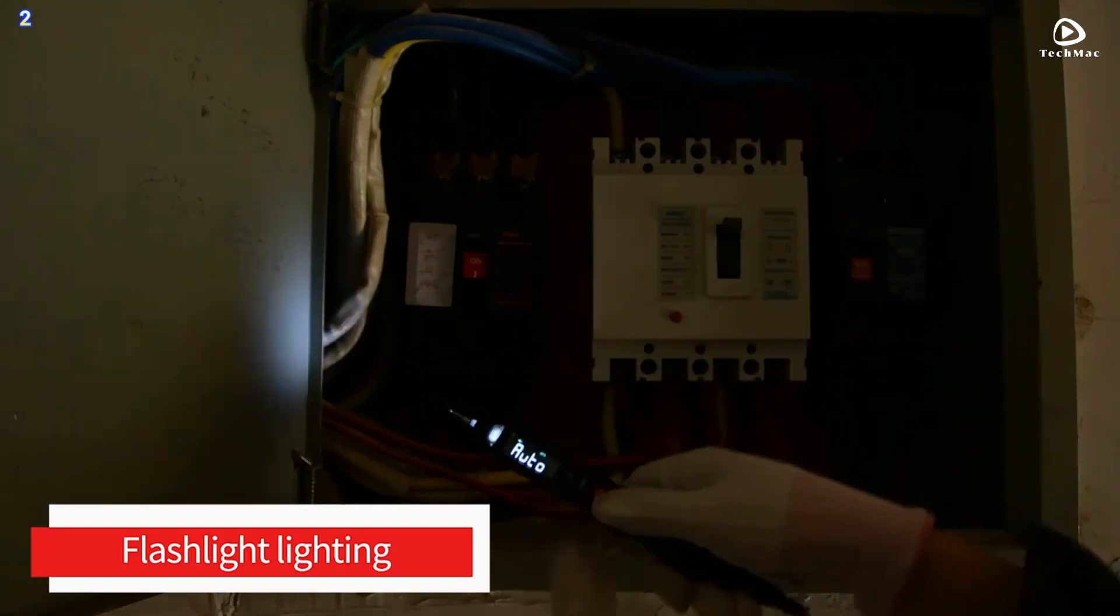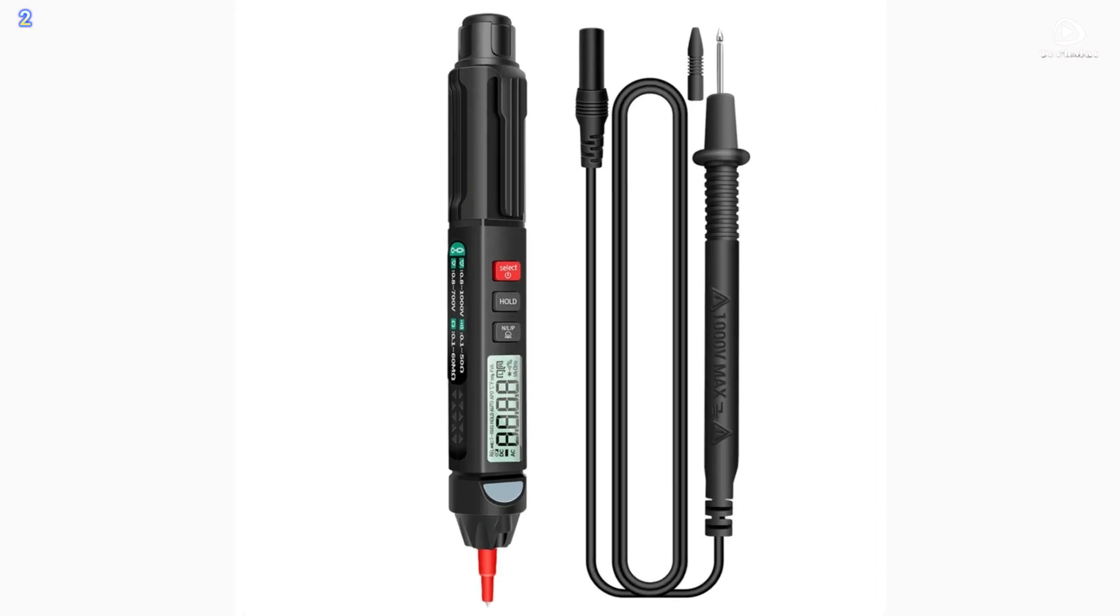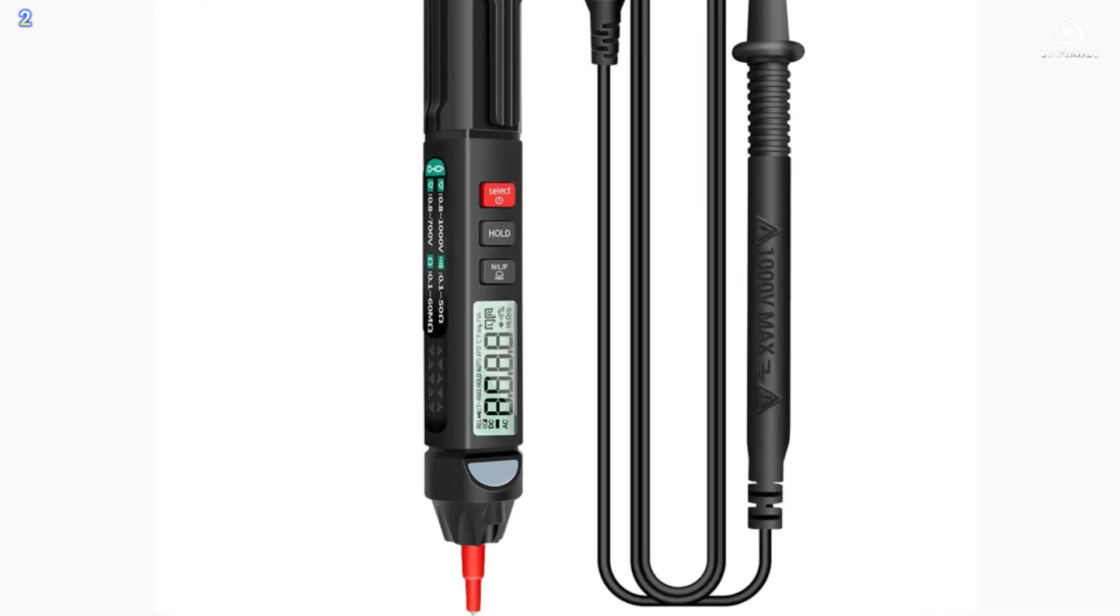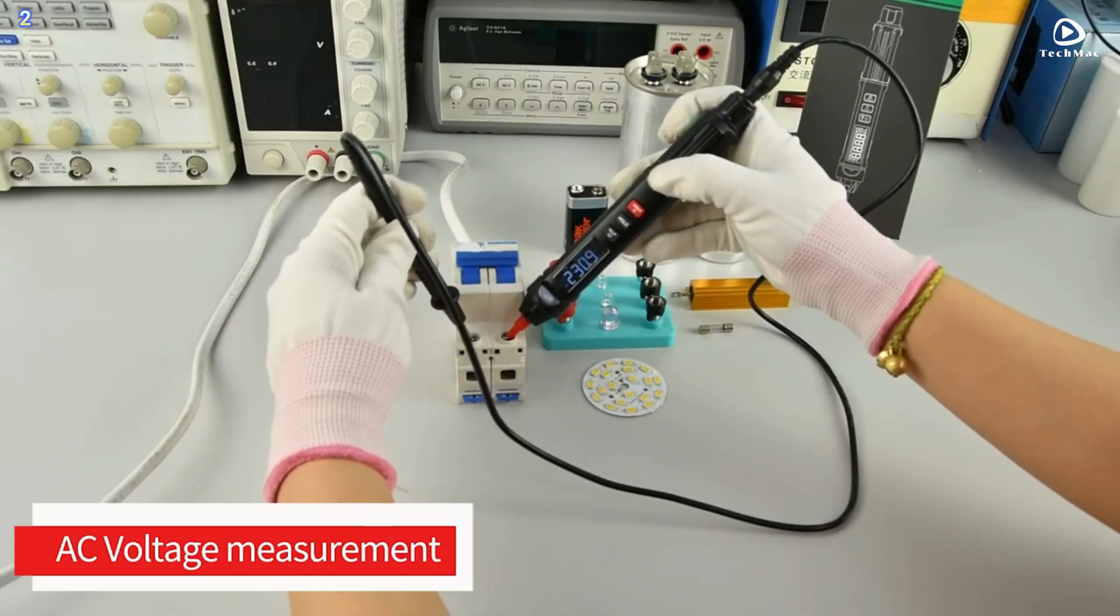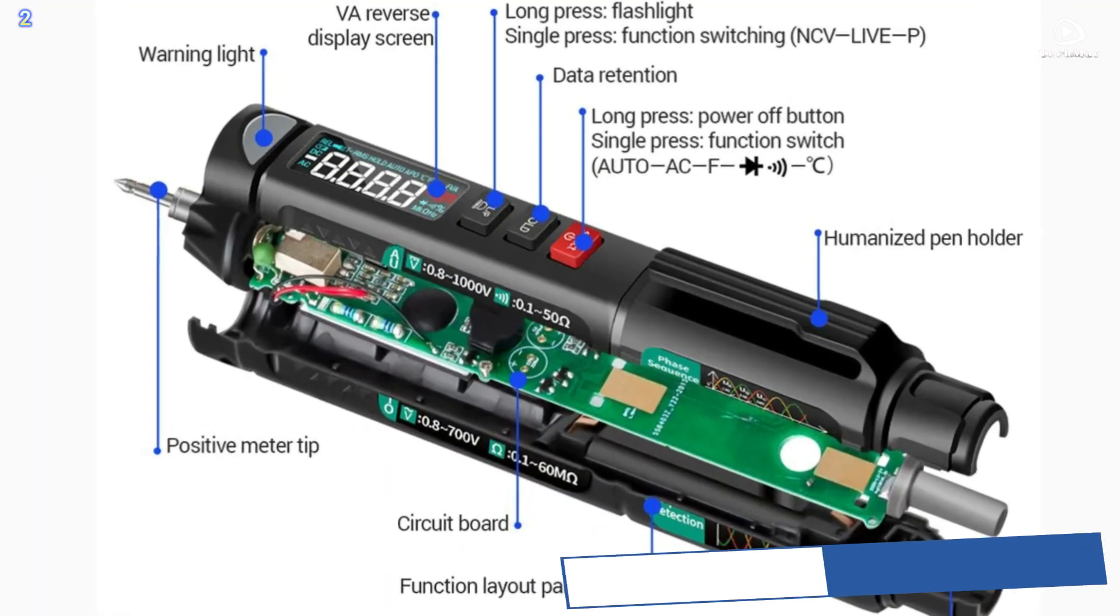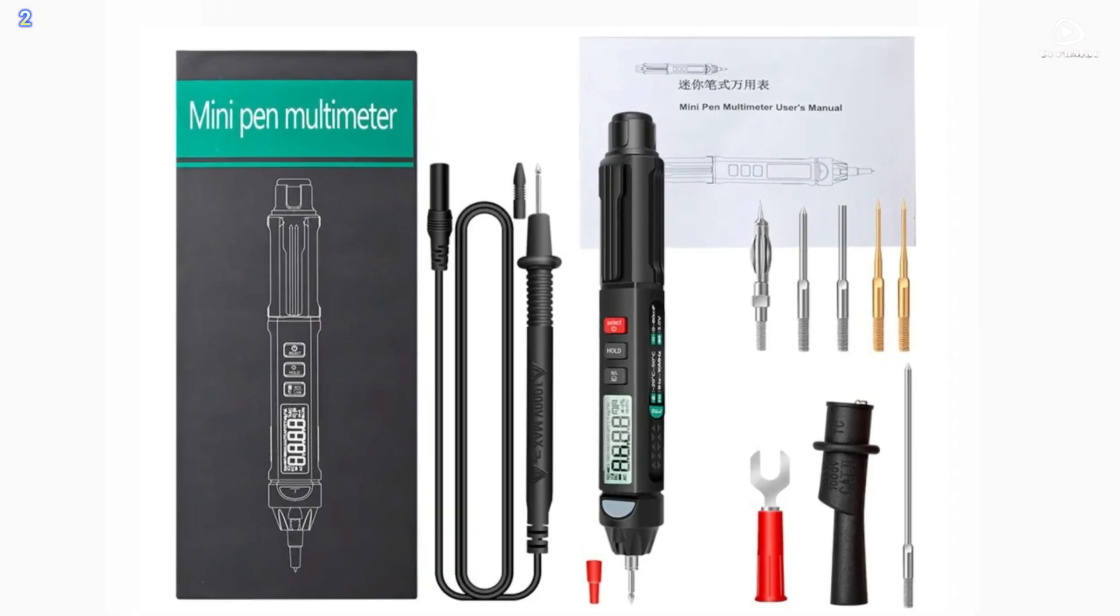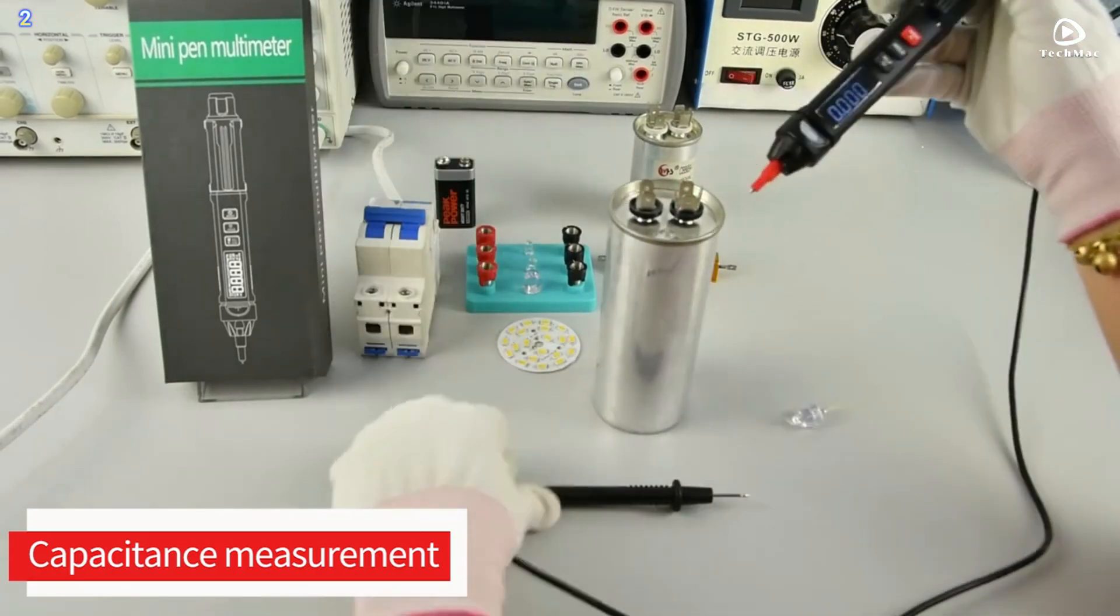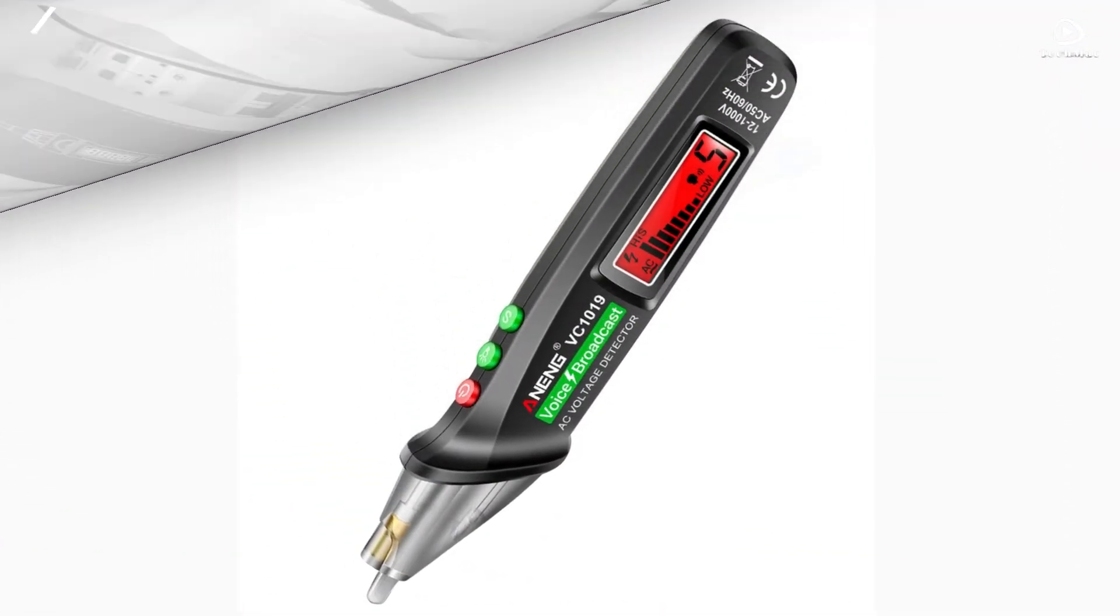VA screen and flashlight: VA reverse display screen, high-definition display, can also see the screen value clearly in a dark environment. It is convenient to find the line in a dim environment too. NCV induction detection: when a nearby AC voltage is detected, the screen EF will display an alarm buzzer and the LED alarm light will be red. Humanized pen holder: auxiliary design pen holder, humanized design.